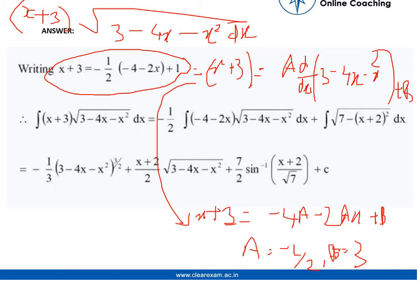Now, this was our original equation. We needed to find the integral of this. So, by completing the square method, we can write as the minus 1 upon 2 integral of minus 4 minus 2x into under root of 3 minus 4x minus x square plus integral of under root 7 minus x plus 2 whole square.